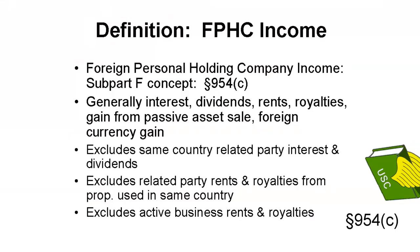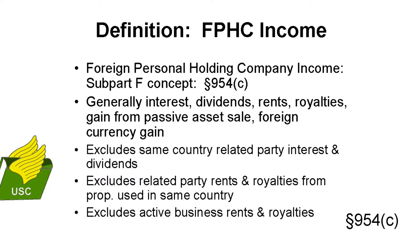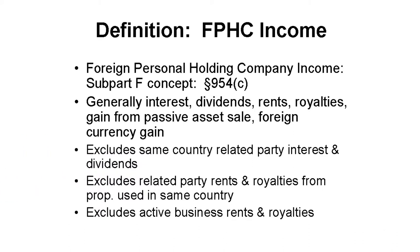Let's briefly look at FPHC income now — keep in mind this quick definition has a lot of holes in it, and we'll fill them in when we talk about subpart F. FPHC income includes interest, dividends, rents, royalties, gain from assets that produce that income, and some foreign currency gains. The gain part is irrelevant for look-through.